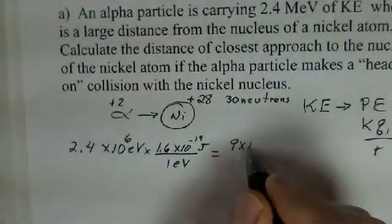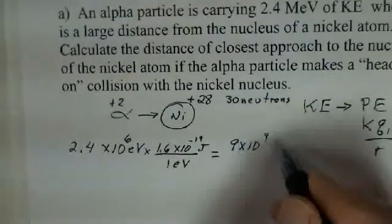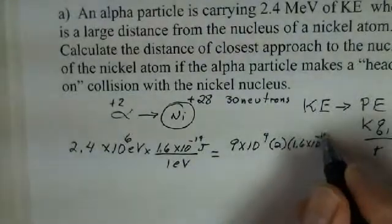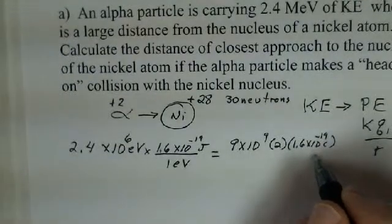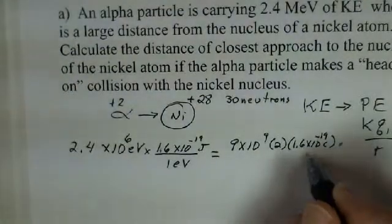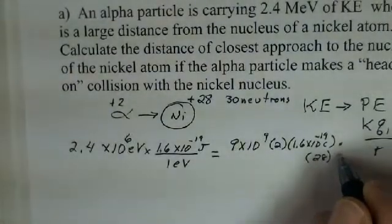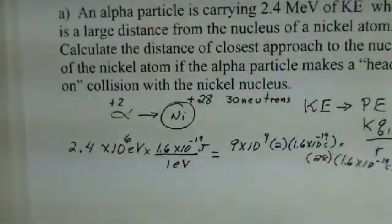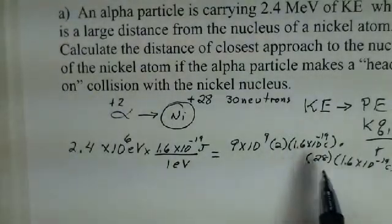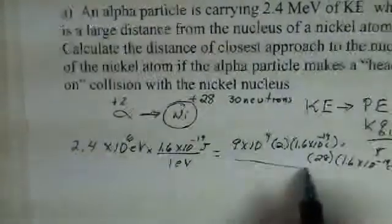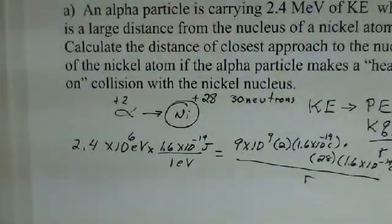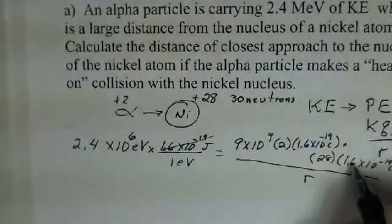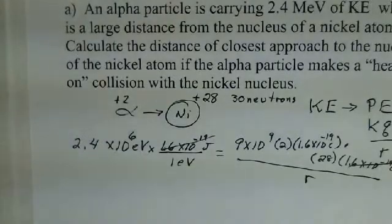Our electric constant K is 9×10⁹. We have two protons on the alpha, each 1.6×10⁻¹⁹ coulombs. And this is another multiplication: times 28 protons in the nickel nucleus, times 1.6×10⁻¹⁹ coulombs. Those are our Q1 and Q2 — 2 units of charge multiplied, and 28 units of charge multiplied. We're trying to calculate R, our unknown. You might notice there's a factor of 1.6×10⁻¹⁹ on both sides — let's cancel those out.